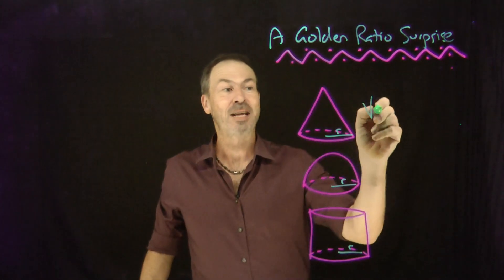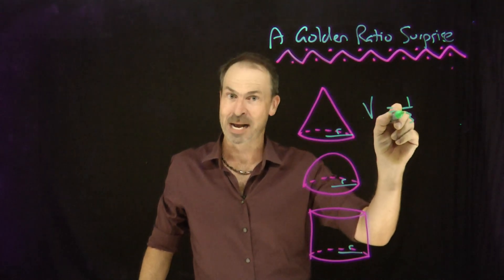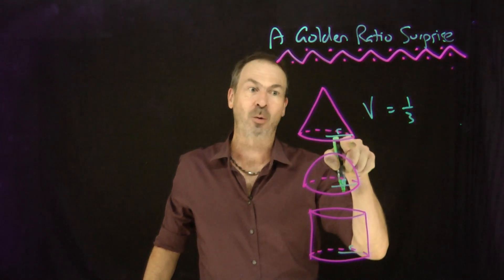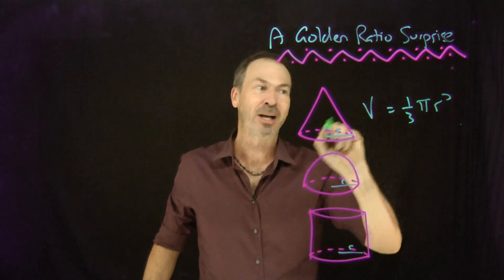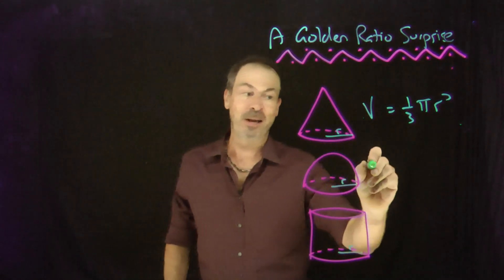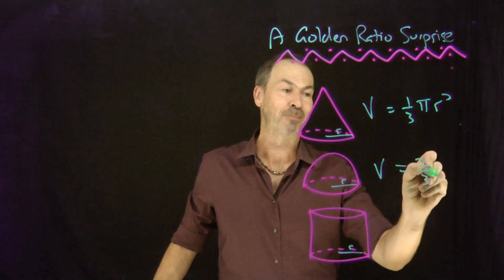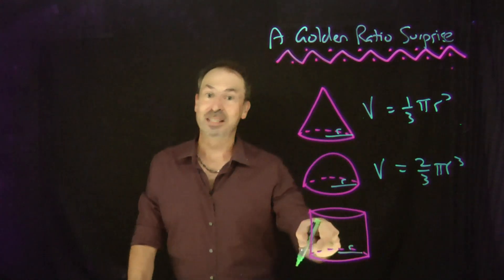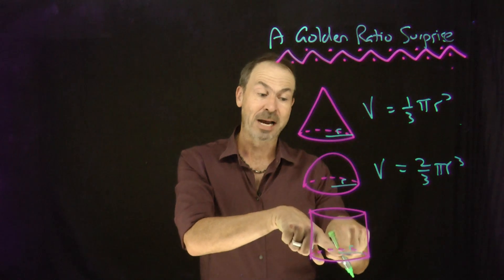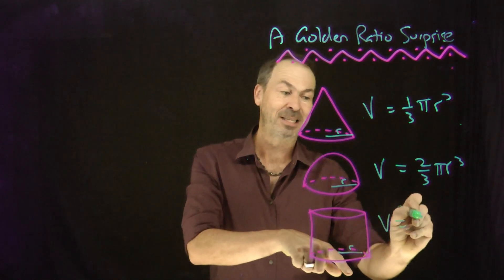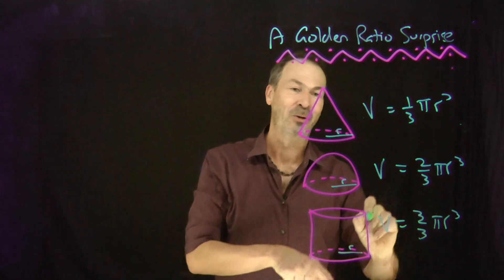Then the volume of the cone here is one-third pi r squared base times height, pi r squared times r, one-third pi r cubed. The volume of the hemisphere is going to be one-half of four-thirds pi r cubed, so the volume of the hemisphere is two-thirds pi r cubed, and the volume of the cylinder for height r would be base times height, pi r squared times r, the volume here is three-thirds pi r cubed.